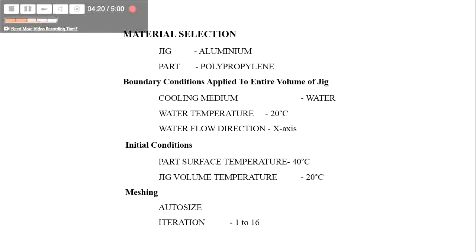The jig is aluminum. The part is polypropylene. The cooling medium is water at a temperature of minus 20 degrees Celsius. The surface temperature of the part is 40 degrees Celsius, and the jig temperature is 20 degrees Celsius as water cools it.